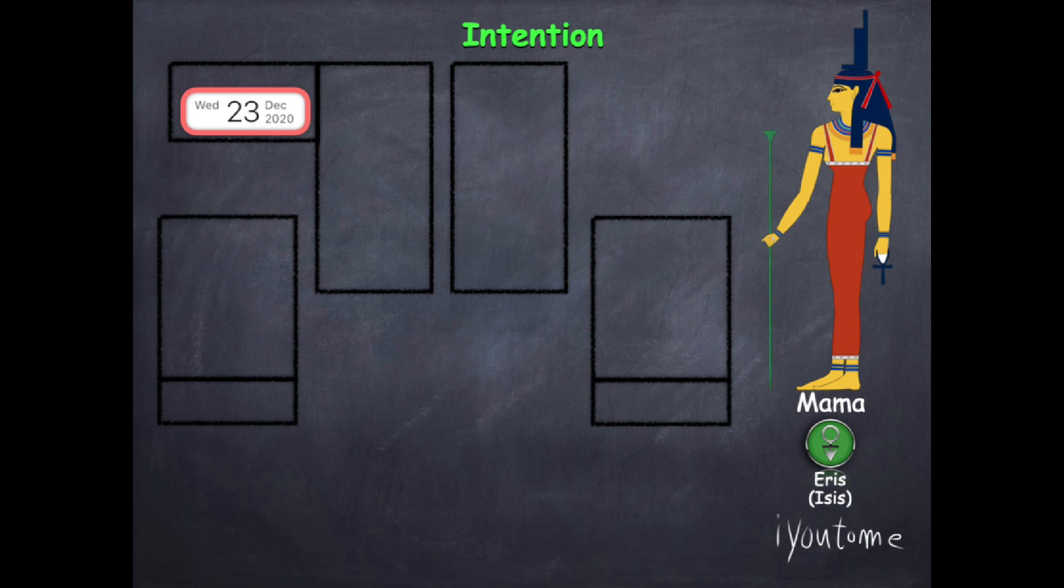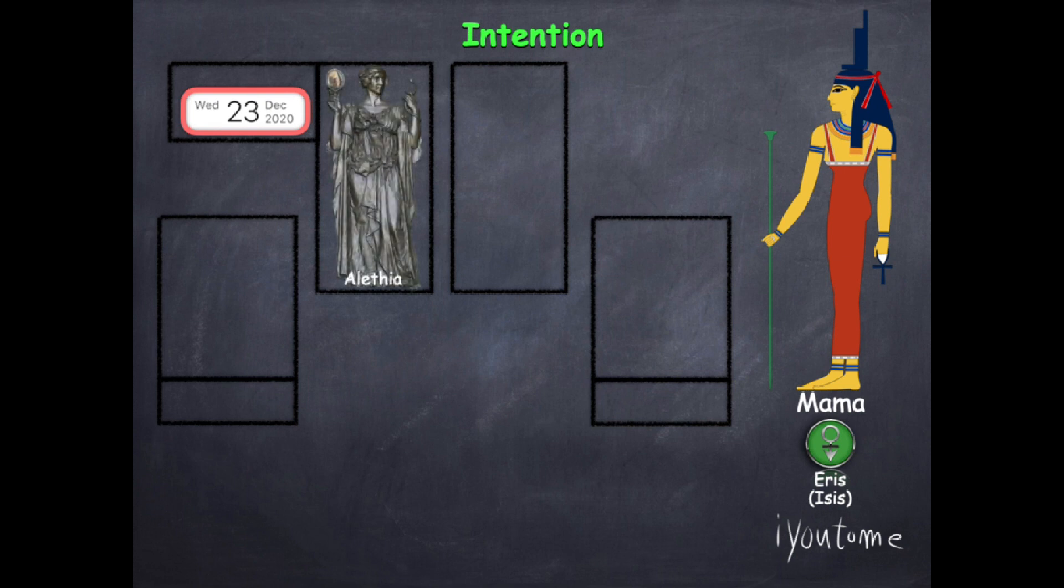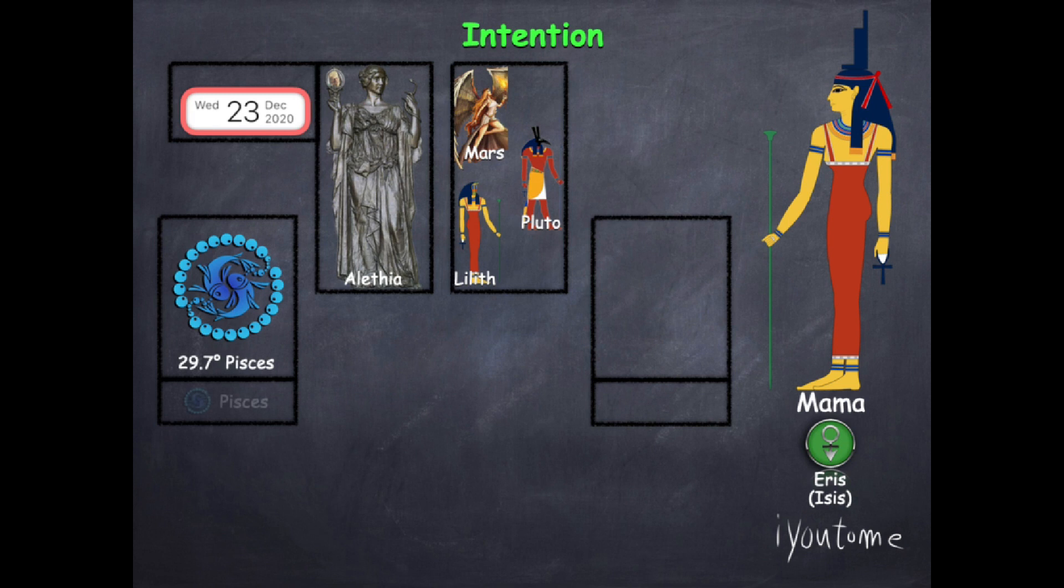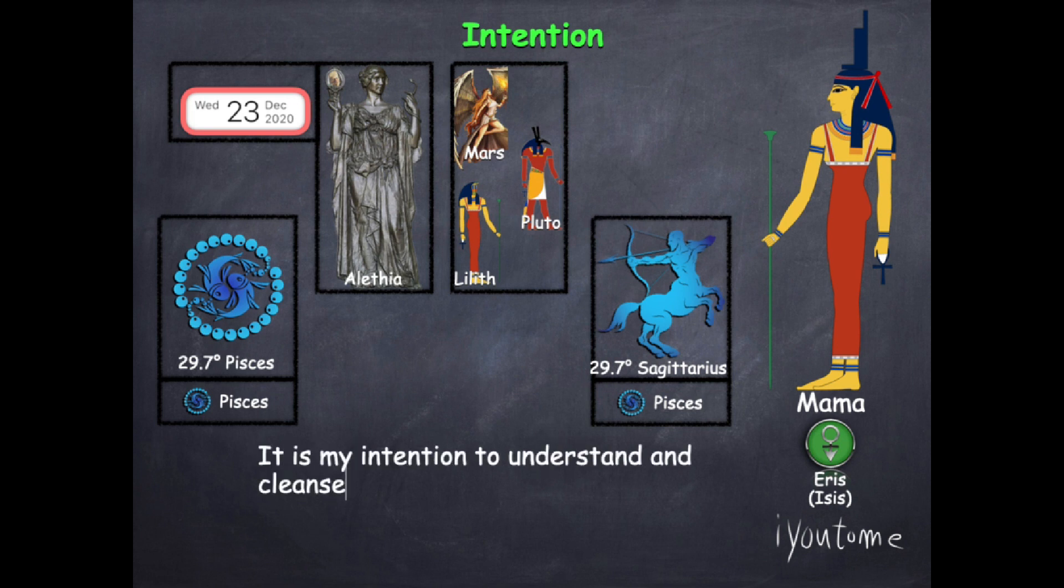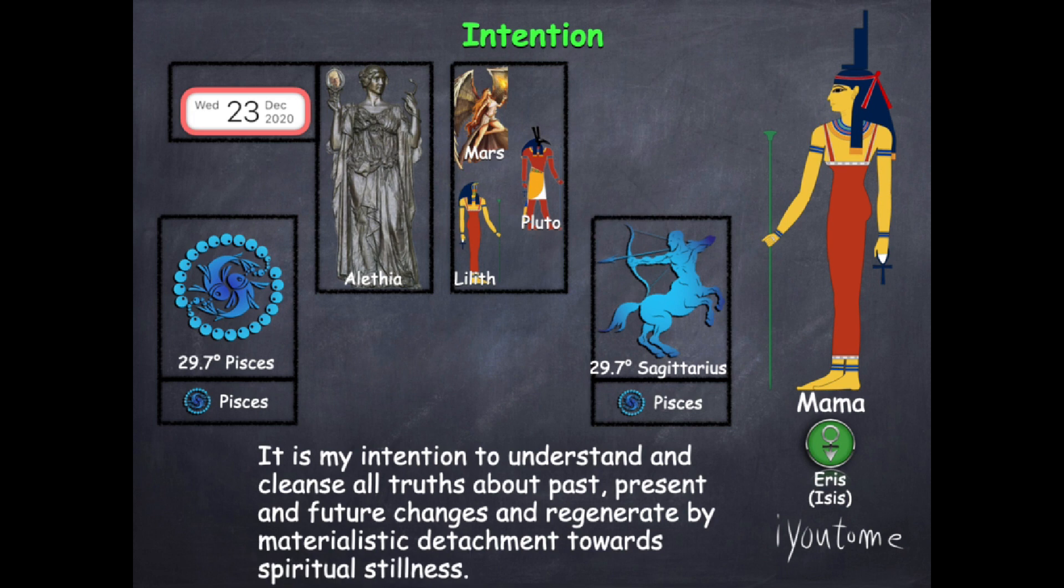There are other alignments that happen on December 23rd. This is a special alignment that not many are talking about. This alignment is between Aletheia the goddess of truth which aligns with Mars the change agent, Lilith the goddess of stillness and Pluto regeneration of the subconscious mind. This happens in Pisces end of cycles and Sagittarius river of heaven both in the sub harmonic of Pisces. This is my intention to the goddess of truth: It is my intention to understand and cleanse all truths about past, present, and future changes and regenerate by materialistic detachment towards spiritual stillness.